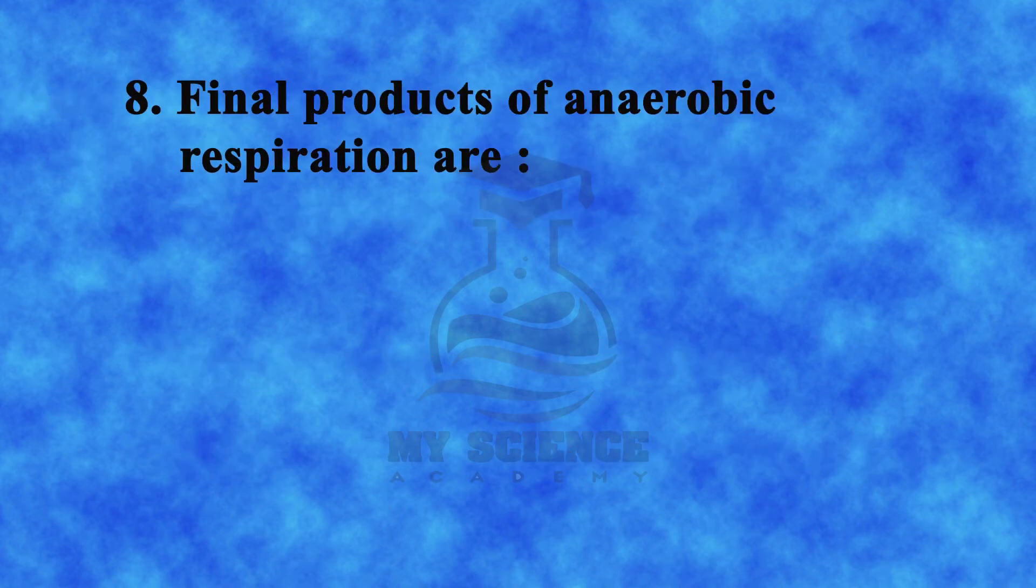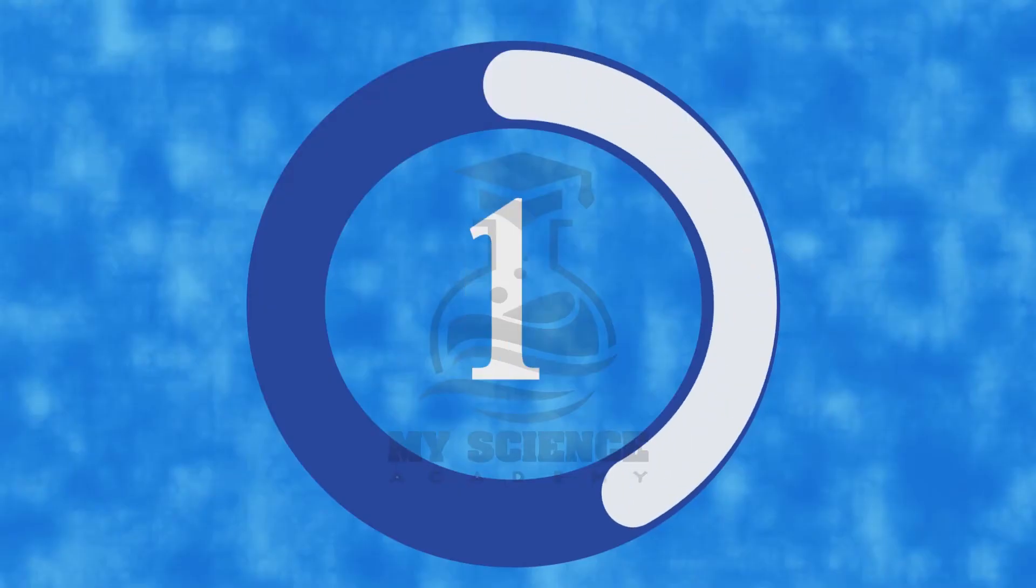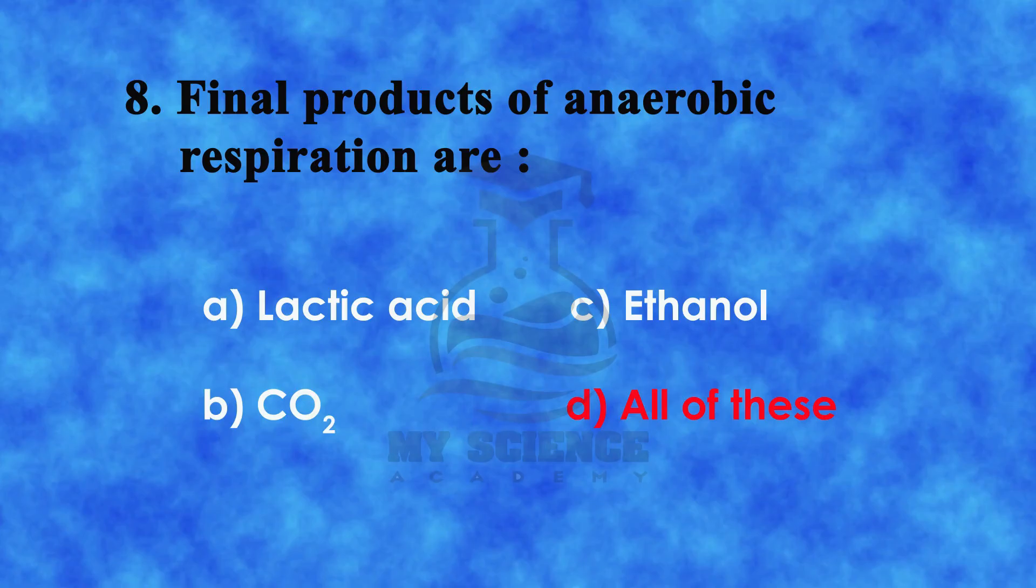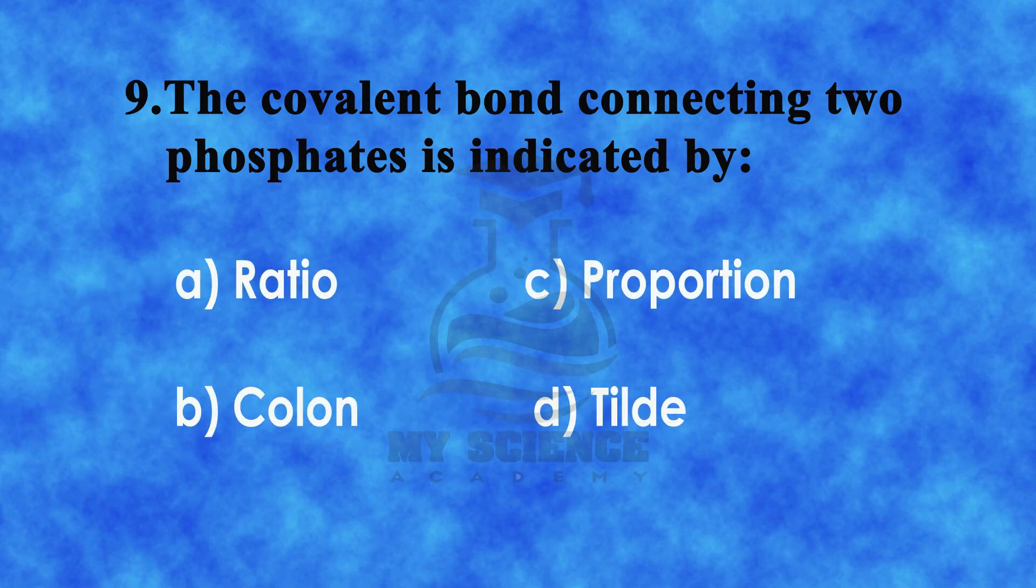Question 8: Final products of anaerobic respiration are: a) lactic acid, b) carbon dioxide, c) ethanol, or d) all of these. The correct answer is d) all of these. Question 9: The bond connecting two phosphates is indicated by: a) ratio, b) colon, c) proportion, or d) tilde.